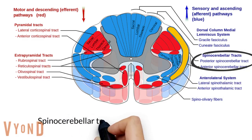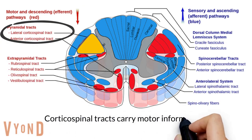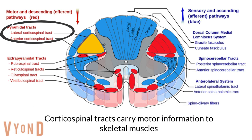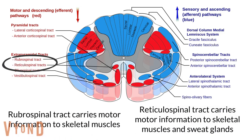The spinal cerebellar tracts, anterior and posterior, carry coordination information. The corticospinal tracts carry motor information to skeletal muscles. The rubrospinal tract carries motor information to skeletal muscles and sweat glands.